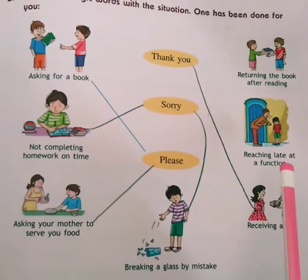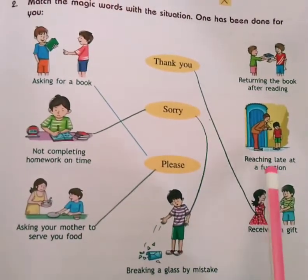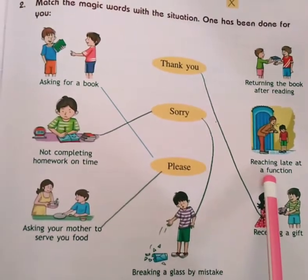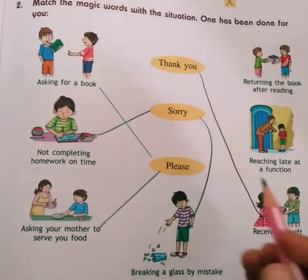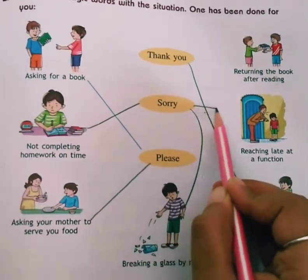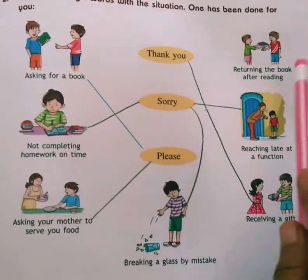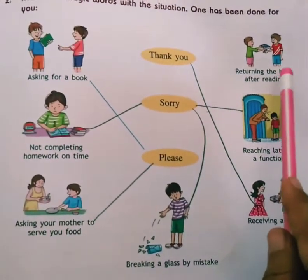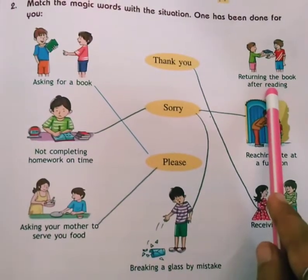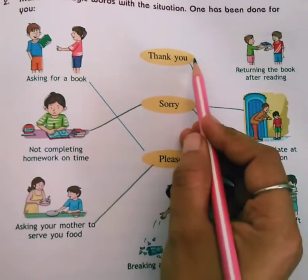Next is 'reaching late at a function.' Suppose you have reached a function late — that is your mistake, so you should say sorry. Next is 'returning the book after reading.' You are returning someone's book after reading it — what will you say? You will say thank you.